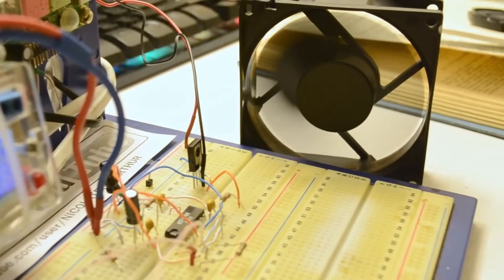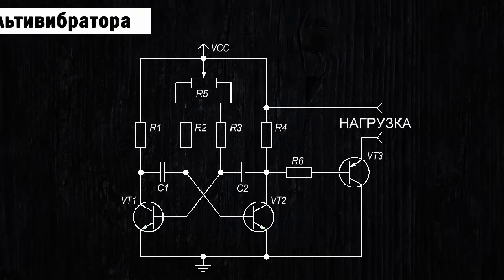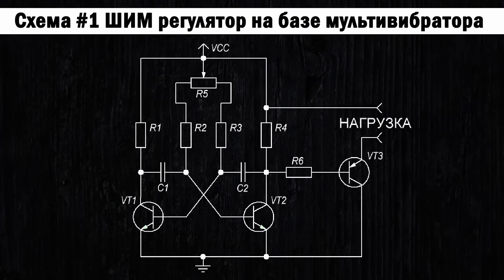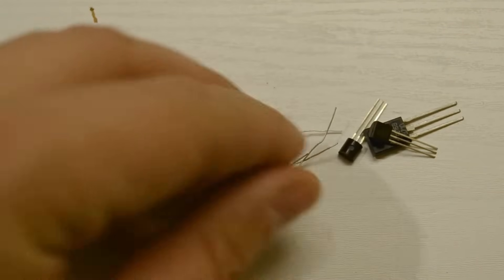And the first circuit is a generator, a PWM signal generator based on a multivibrator, which allows you to assemble a PWM signal source literally from scrap. You will need three transistors, five resistors, two capacitors, and a potentiometer.